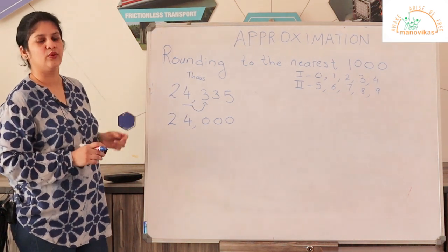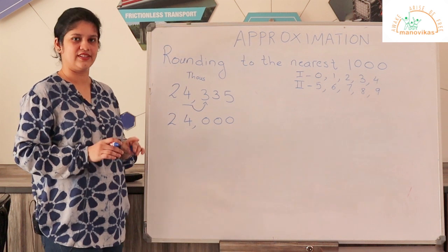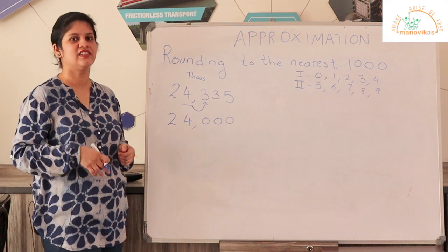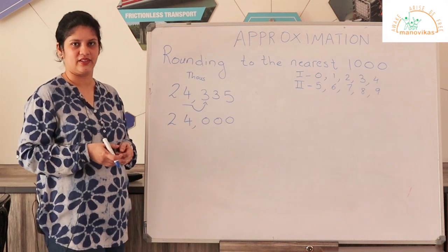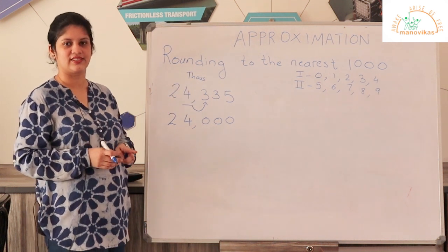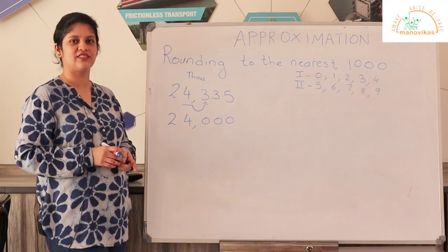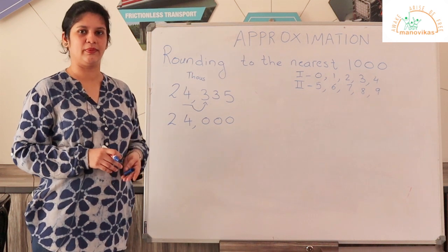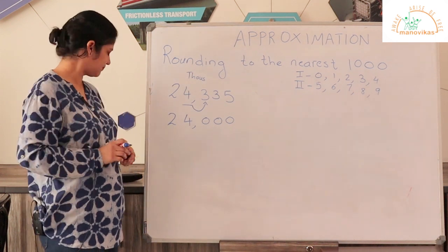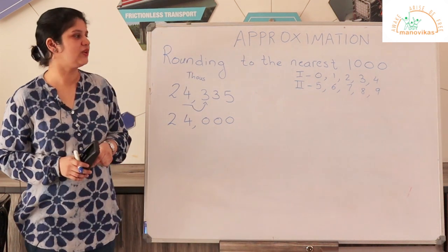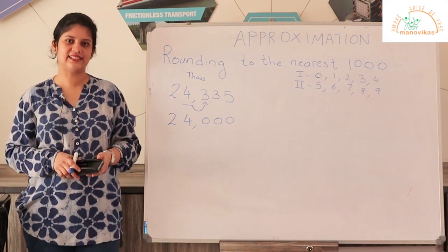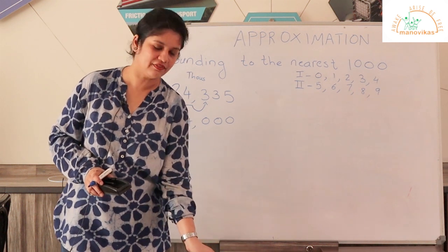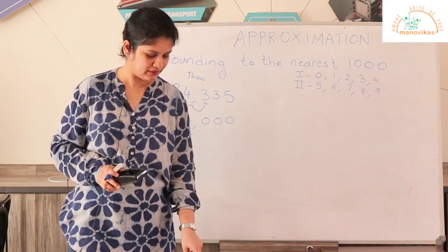So this is the way you round to the nearest tens, hundreds, or thousands. When rounding to the nearest ten, underline the digit in the tens place, check the digit after it, and determine whether it belongs to the first range (0–4) or second range (5–9). If it is in the first range, the digit does not change. If it is in the second range, the digit has to be increased by 1. You all can solve questions 1, 2, and 3 of exercise 1D from the textbook.